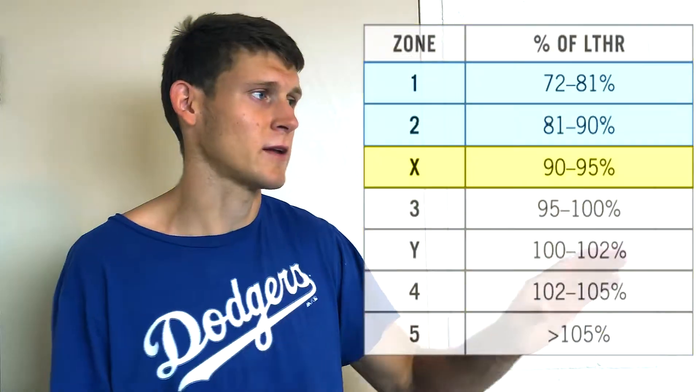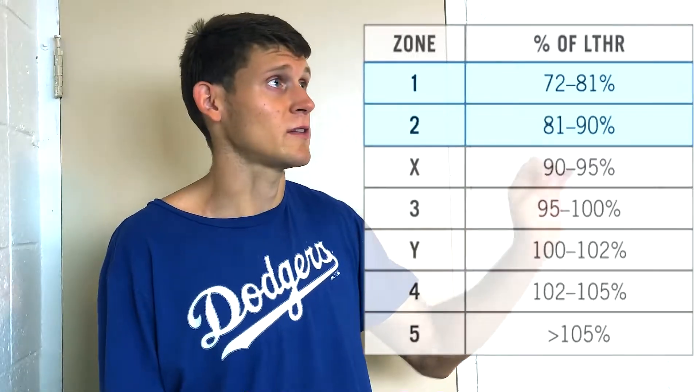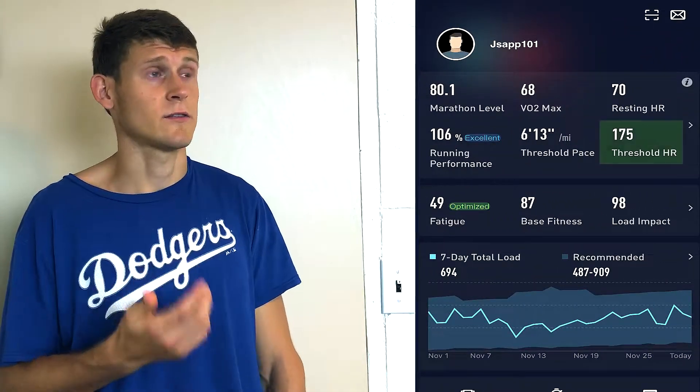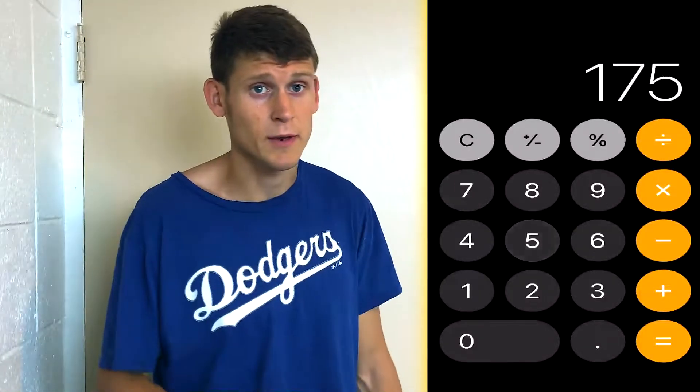Looking at this chart, Zone 1 and Zone 2 are where we want to be for base training. Zone X is when we start entering a threshold heart rate. For recovery and easy training we stay in Zone 1, and for base training we stay in Zone 2 — these are based off lactic threshold heart rates. I've been using Coros to record my data and my lactic threshold heart rate starts at 175. The highest I can go in Zone 2 is 90% of that: 175 multiplied by 90% gives 157.5, rounded up to 158 bpm — very similar to the MAF heart rate.